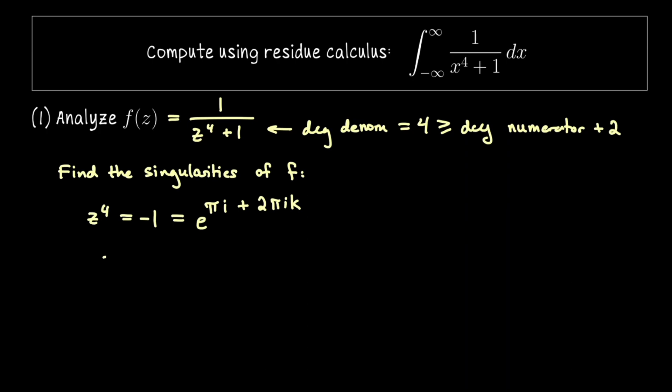We can solve for z now by taking the fourth root of each side so z is going to be e to the pi i over 4 plus pi i k over 2. Now notice the second term is indicating rotations by factors of pi over 2 or 90 degrees.